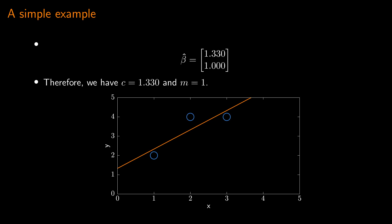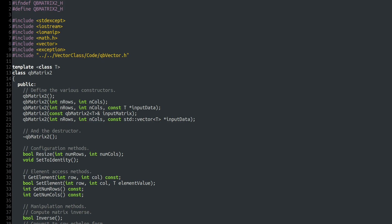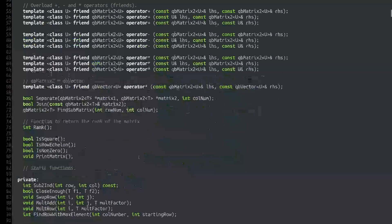That is actually all that we need to know. With the tools we've already developed as part of our linear algebra library, implementing linear least squares is really easy. All we need to add is a function to QBMatrix2 to compute the transpose, and then it is simply a matter of using the linear least squares equation. I have also made a minor change to the QBMatrix class — specifically to the code handling the case of a matrix multiplied by a vector. Let's have a look at that first.